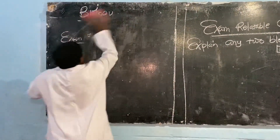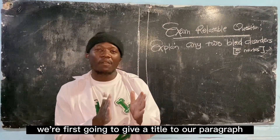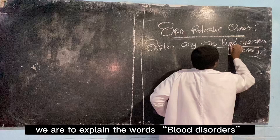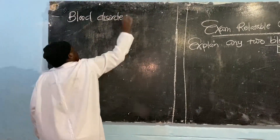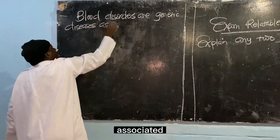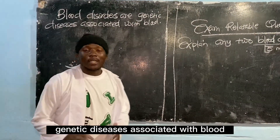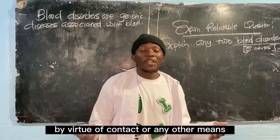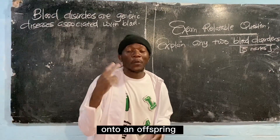So when we say explain two blood disorders, having targeted the keywords, we're firstly going to give a title to our paragraph and our answer is going to be in a single paragraph. Blood disorders are genetic diseases associated with blood — these are diseases that cannot be transmitted from one person to another by conduct or any other means, but only through inheritance, from a parent onto an offspring.